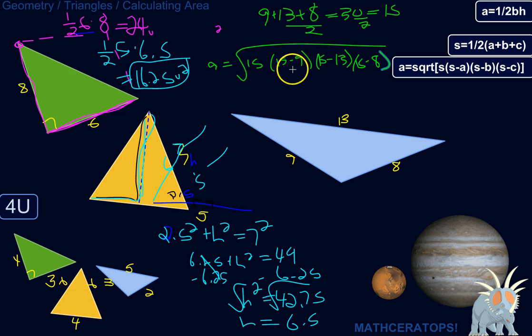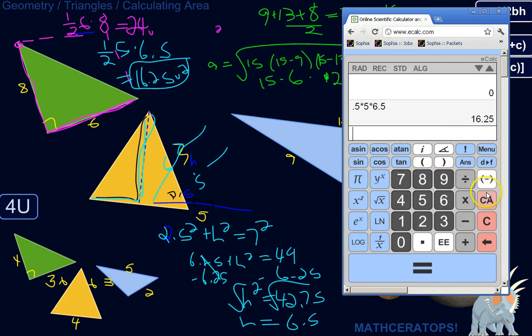So 15 minus 9 would be 6. 15 minus 13 would be 12. 15 minus 8 would be 7. So we've got, beneath the radical, we've got 15 times 6 times 12. Sorry, 2. 15 minus 13 is 2. So 15 times 8, which is 7.